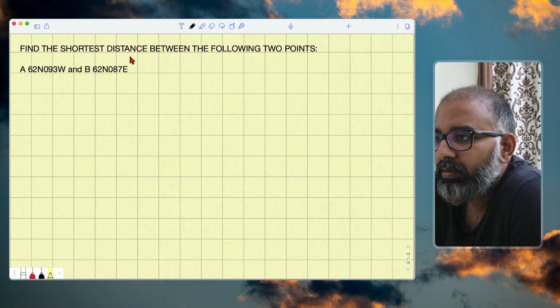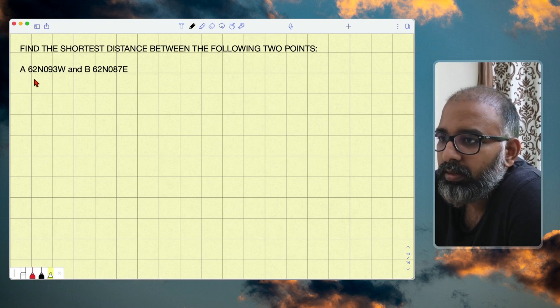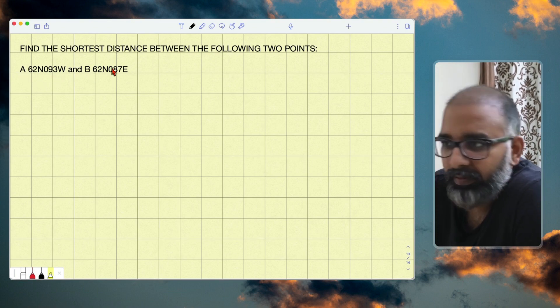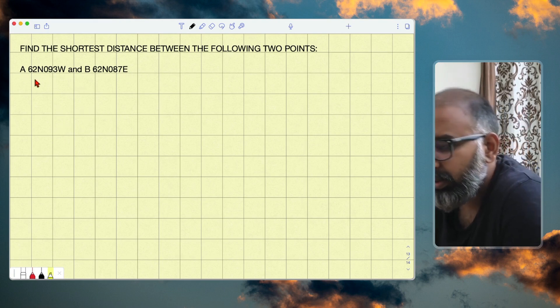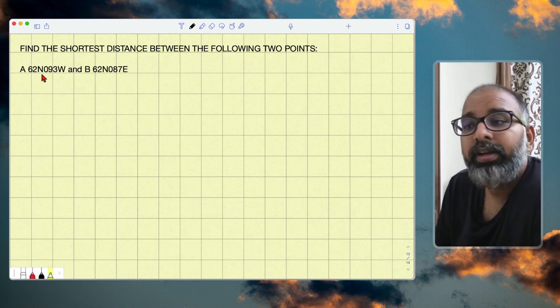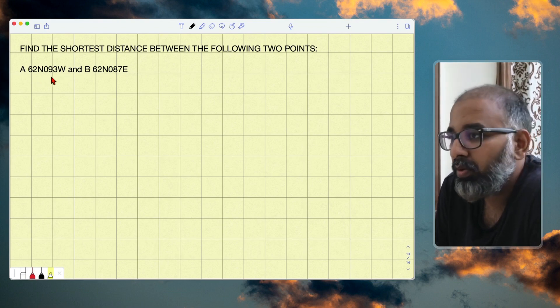Find the shortest distance between the following two points: 62 degrees north 93 west and 62 degrees north 87 east. Now as soon as you see this in your exam, you are already in a hurry to complete - you have less time in your exam to do it as soon as possible.